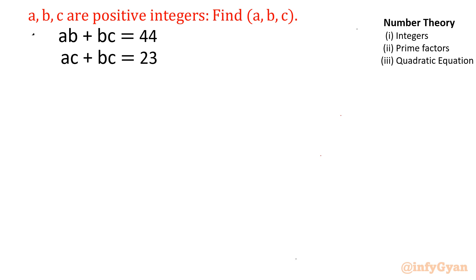I will consider this is equation 1, this is equation 2. Then I can see easily bc is common in both equations. So I can consider the subtraction. If I subtract both equations, then ab minus ac will come out 21.